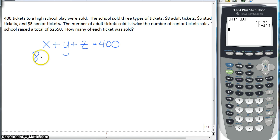We have $8 per adult ticket plus $6 per student ticket plus $5 per senior ticket is equal to a total of $2,550. And then finally, we have the number of adult tickets sold is twice the number of senior tickets. So X is equal to 2 times Z.